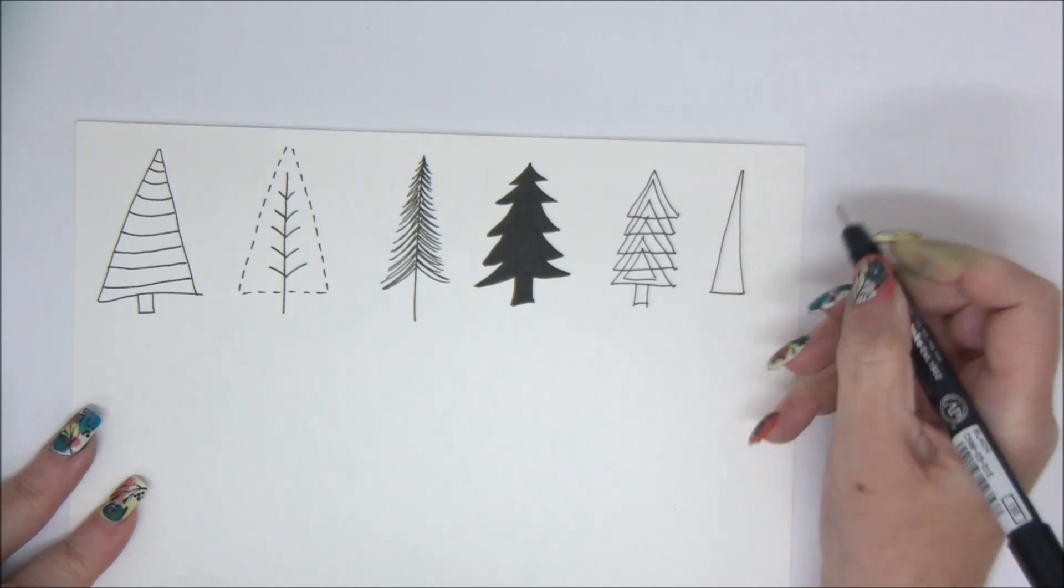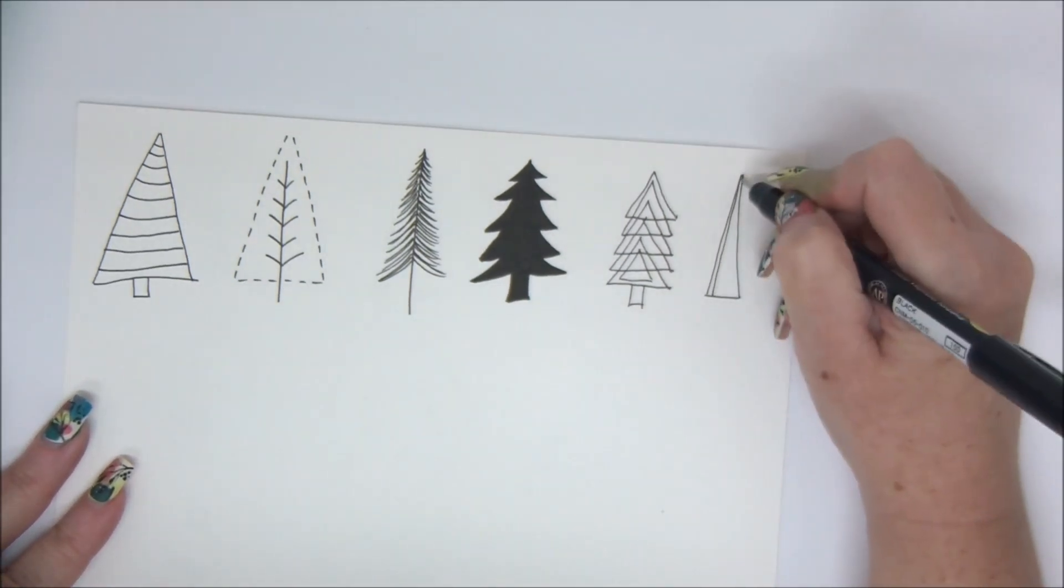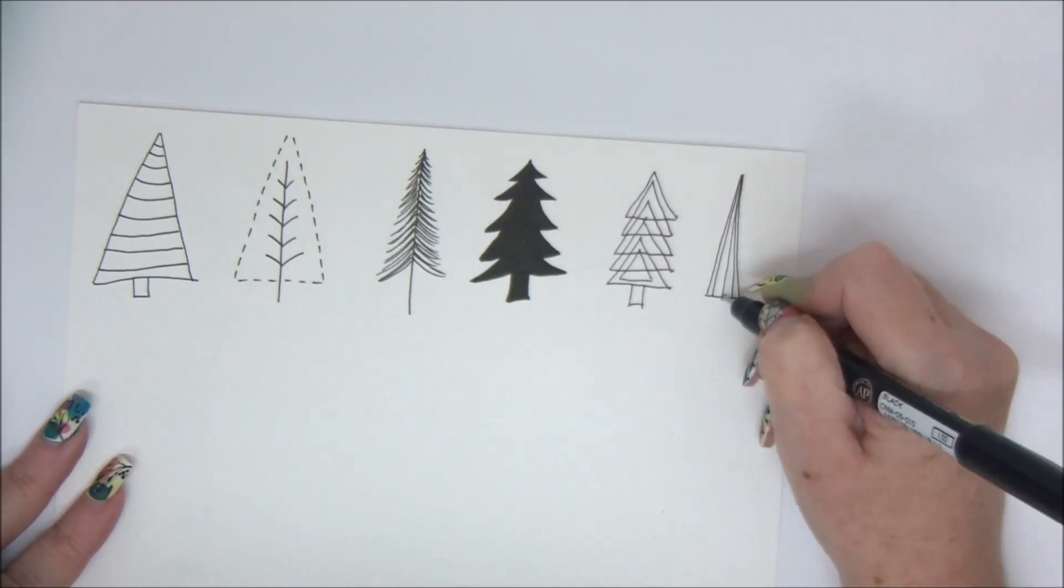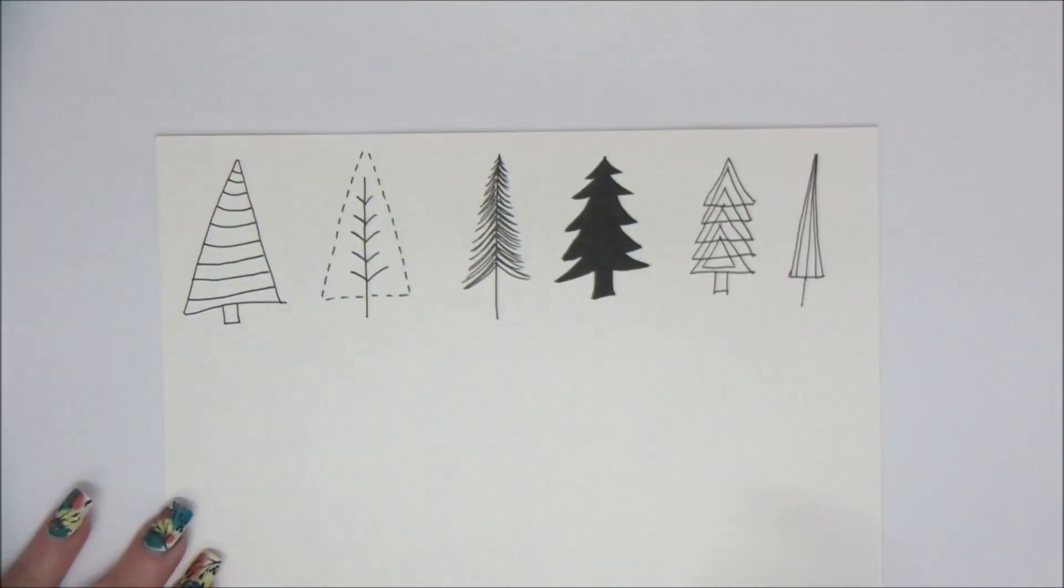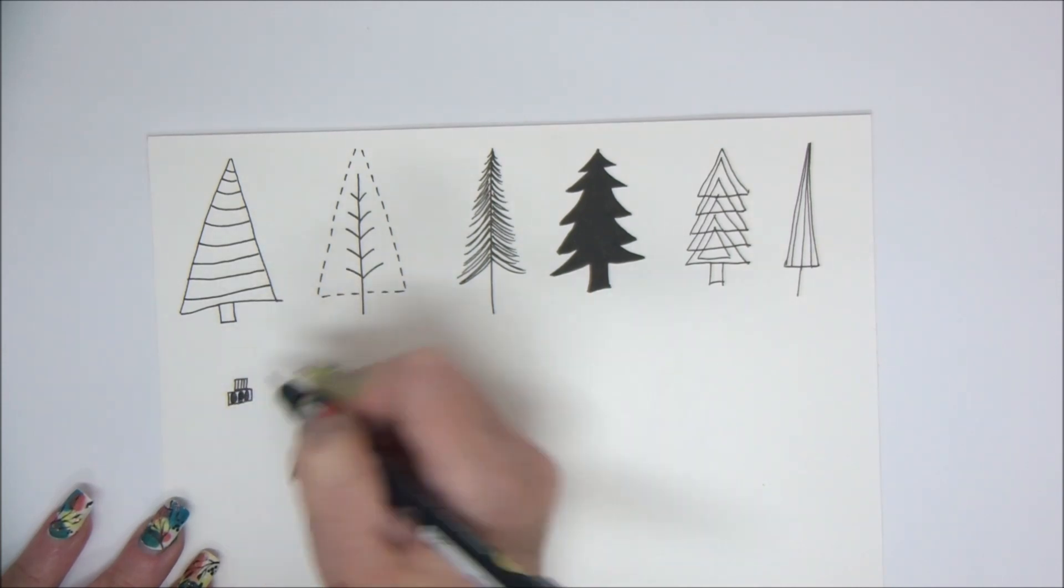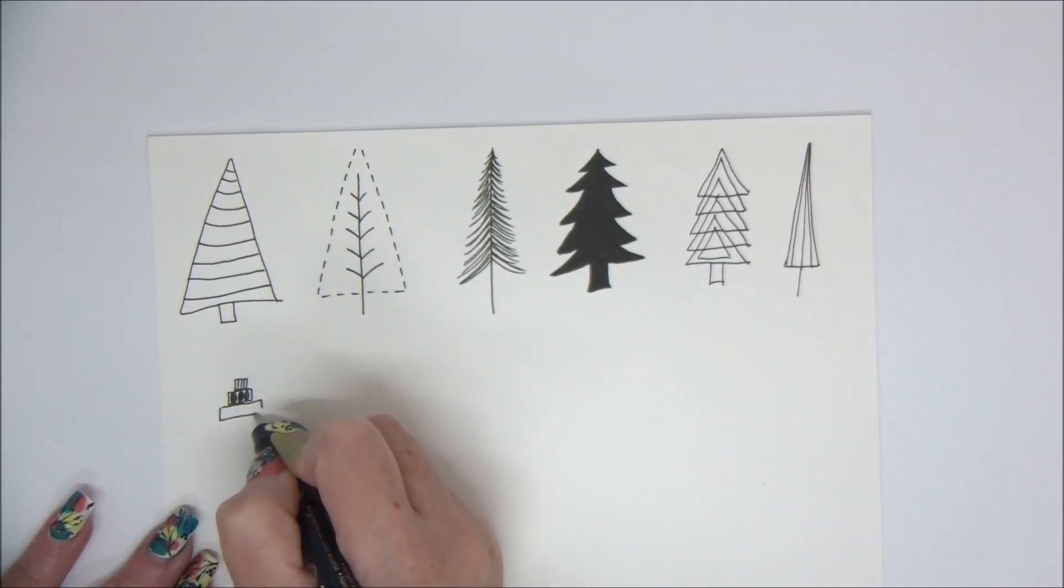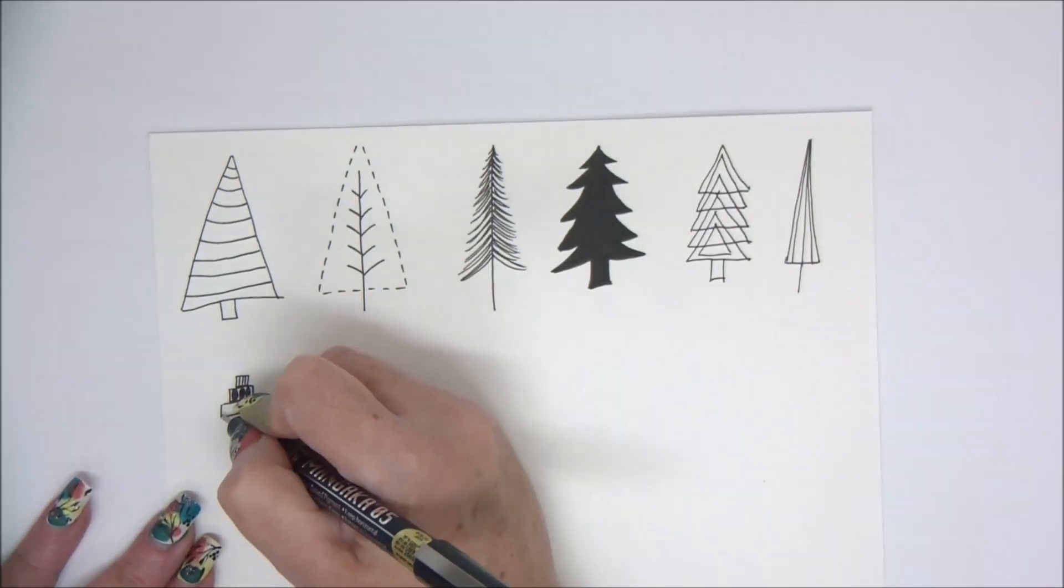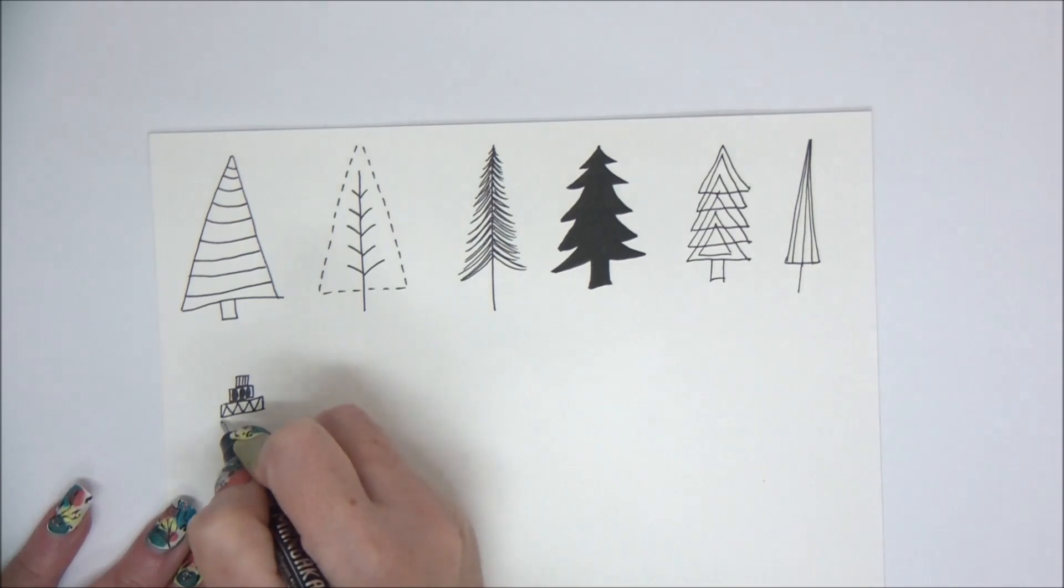The last one on the row is a narrow tree with some vertical lines. Basically, just by making a few lines you can really make beautiful Christmas tree drawings.